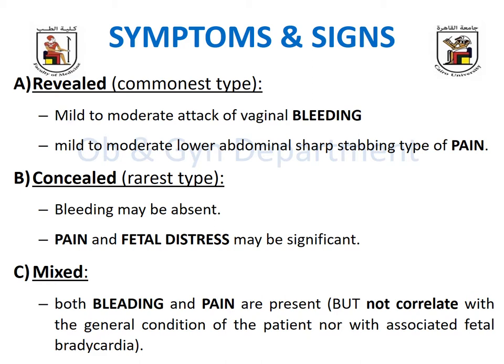The clinical presentation varies according to type. In the revealed type, the most common type, the patient presents with mild to moderate vaginal bleeding. Importantly, there must be associated pain — not colicky labor pains but a sharp, stabbing pain, mild to moderate, in association with the vaginal bleeding.